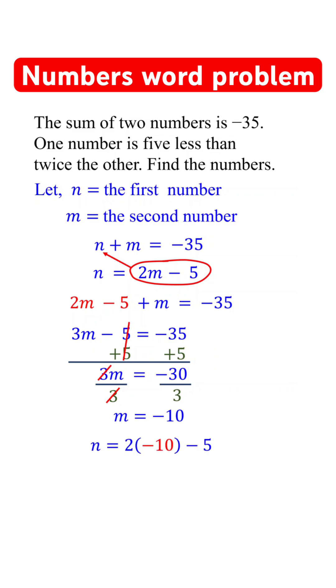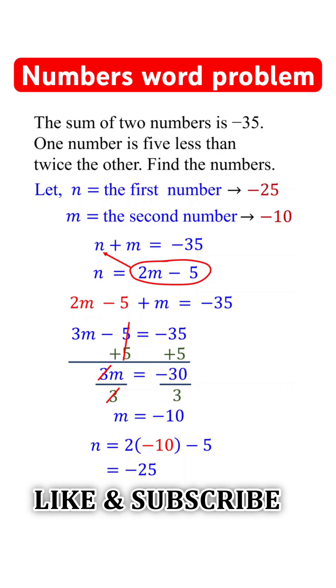Now substitute this into the second equation to solve for n. Therefore, the two numbers are negative 25 and negative 10.